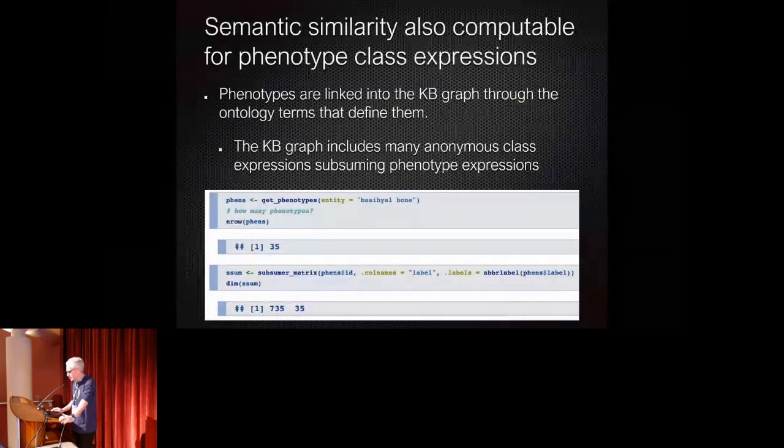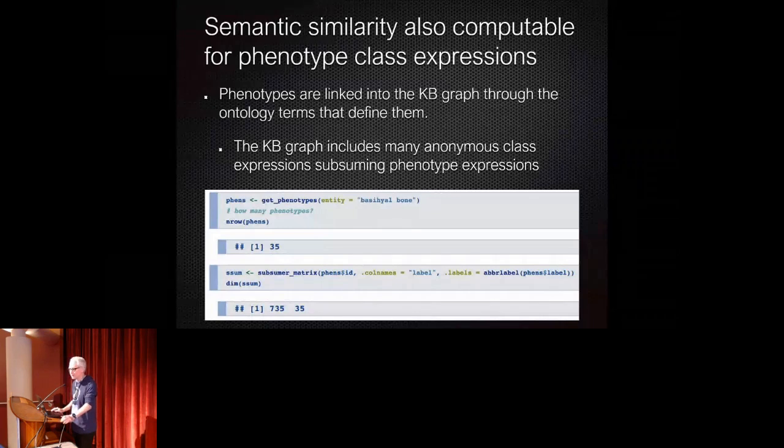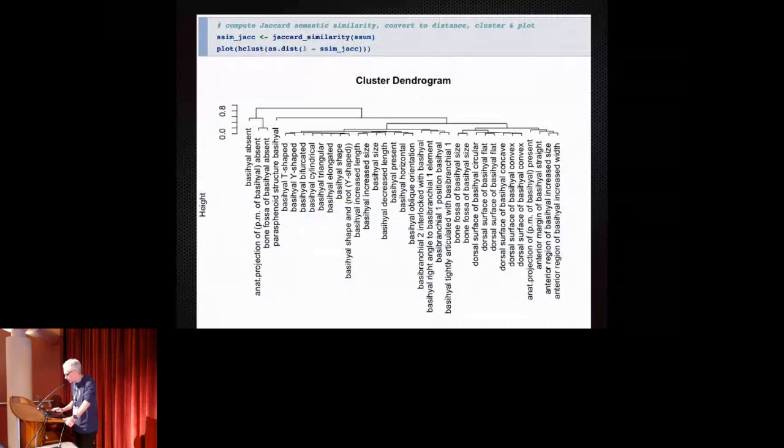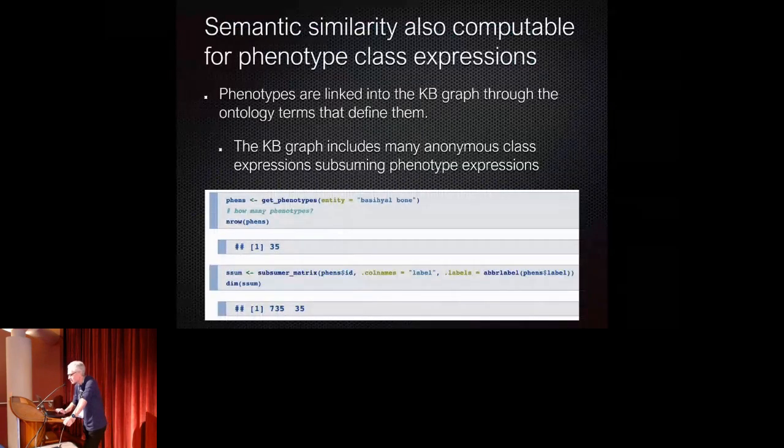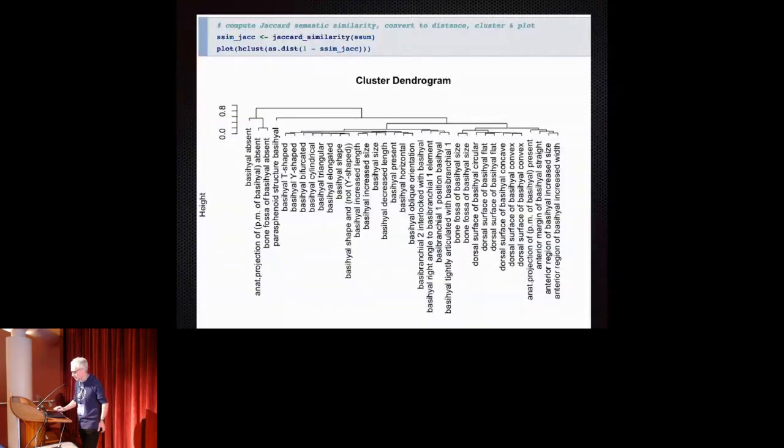And so what I want to get to here is that semantic similarity is also computable for phenotype class expressions. They showed us just for illustrations for straight up anatomy ontology terms. And so we can, for example, do this for all the phenotypes of the basihyal bone across the entire Phenoscape knowledge base and see that we have, we end up with different clusters. For example, you see here the shapes, here the sizes and lengths, and then here is some basihyal, some surfaces. So you can really visualize the similarities between the different phenotypes being more closely or being more distantly related.